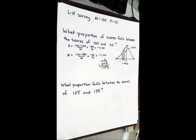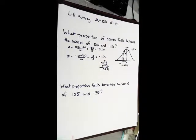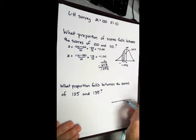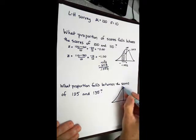Let's try this problem down here. What proportion of scores falls between the score of 125 and 135? Again, what are we going to do? We're going to draw out that distribution.